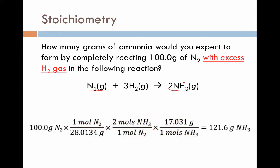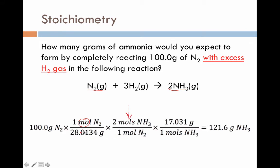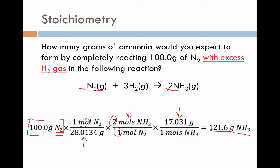Here's the math worked out as a dimensional analysis problem. We started with our 100-gram sample. The first step, as always, is to convert this value into moles so it matches the mole-to-mole ratio. We looked up the molar mass of nitrogen, multiplied by 2 because it's N₂, to get 28.0134 g/mol. Once we have moles of nitrogen, we use the mole-to-mole ratio from the balanced equation — coefficient 1 for nitrogen and 2 for ammonia. Finally, we convert moles of ammonia into grams using its molar mass to find 121.6 grams of ammonia produced. If this seems mysterious, go back and review stoichiometry before proceeding.